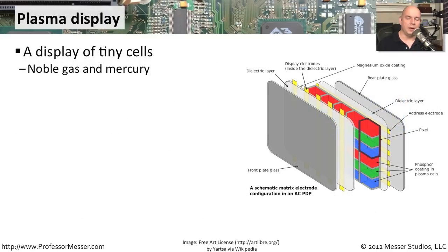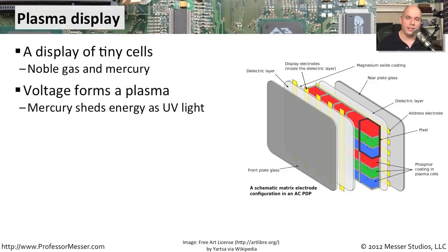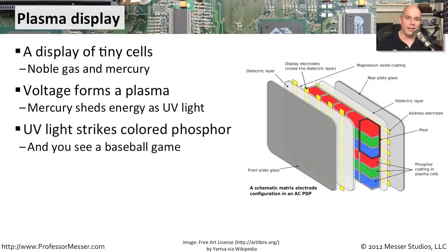Another type of modern display is the plasma display. A plasma display is one that has tiny little cells all in the display itself. Those cells have inside of them a noble gas and mercury. When you provide a voltage to that, it creates a plasma that then sends out ultraviolet light. That ultraviolet light hits a phosphor that is on each one of those cells, and the phosphor glows a particular color.